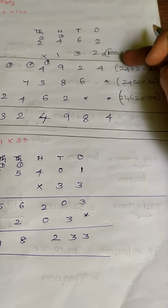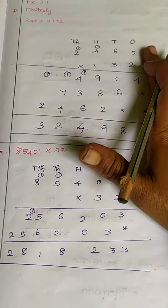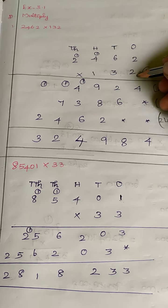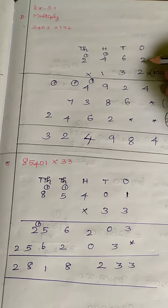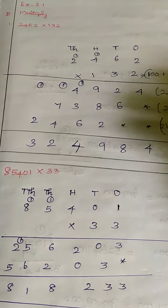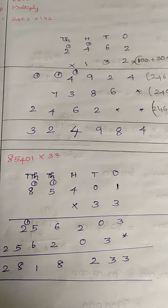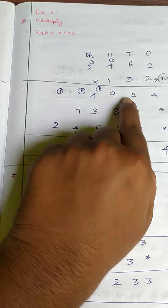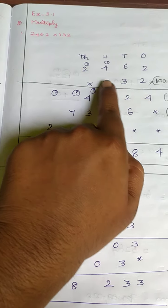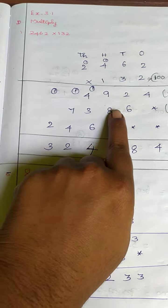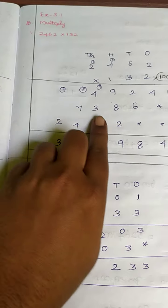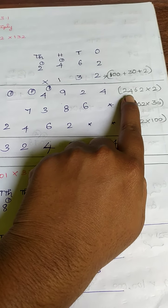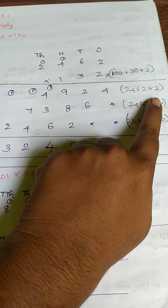These steps are not necessary to write — you can do direct multiplication as you know. We begin with the first multiplication using the number in the 1s place, which is 2. So: 2 twos are 4; 6 twos are 12, carry over 1; 4 twos are 8, plus 1 is 9; 2 twos are 4. This is what we have multiplied: 2462 multiplied by 2.